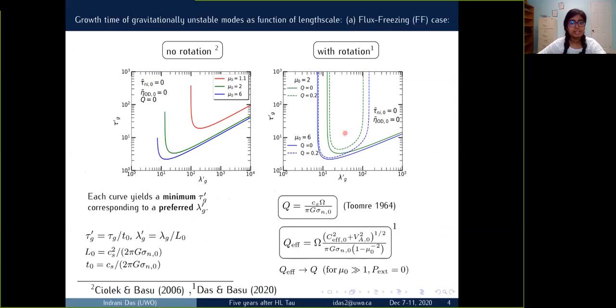In this slide, these two figures are showing the growth time of gravitationally unstable modes as a function of length scale obtained in the flux-freezing limit. We normalize all the time scale and all the length scale with respect to T₀ and L₀ respectively as defined here. So the left plot is showing the case with no rotation. Q is the Toomre Q rotation parameter. So without rotation we are seeing the range of the unstable wavelengths is wider for each different mass to flux ratios.